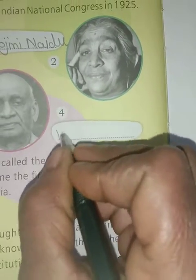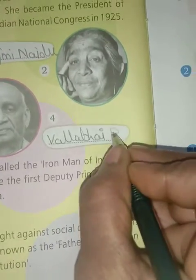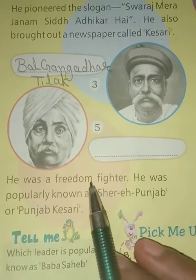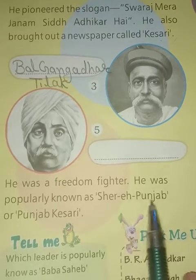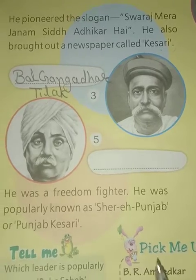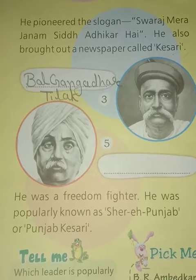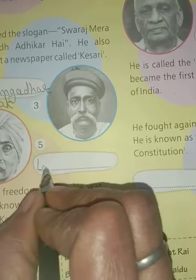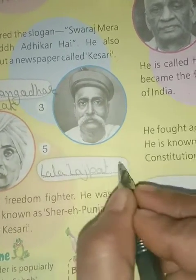Fifth: He was a freedom fighter properly known as Punjab Kesari. Lala Lajpat Rai was born on 28th January 1865 and was properly known as Punjab Kesari. The answer is Lala Lajpat Rai.